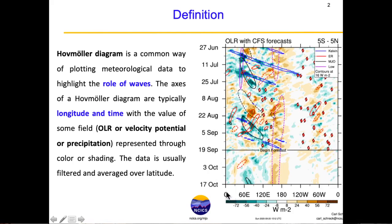The longitude basically covers from one basin all the way around and comes back to that basin again — so it covers the entire globe. This is useful because the waves we talk about, especially the Rossby waves, equatorial Rossby waves (represented by ER), Kelvin waves, or even the MJO, actually travel east-west or west-east. That is why it is useful to find out how these waves are traveling when you plot them on a Hovmöller chart. You can see that this Kelvin wave, shown in blue, has traveled from around 30°E to 120°W — basically from the Atlantic Basin all the way to the Pacific Basin.